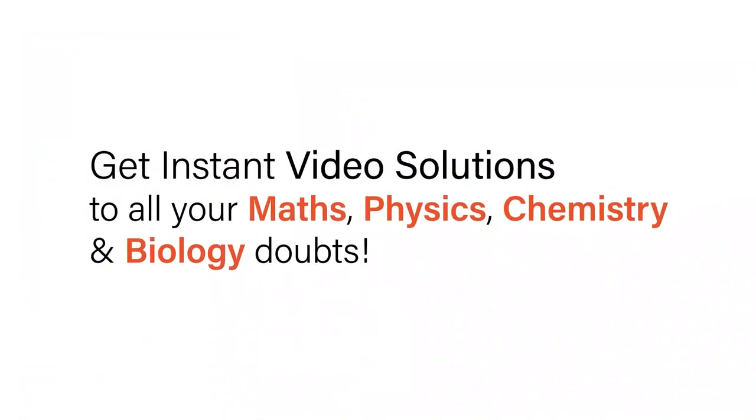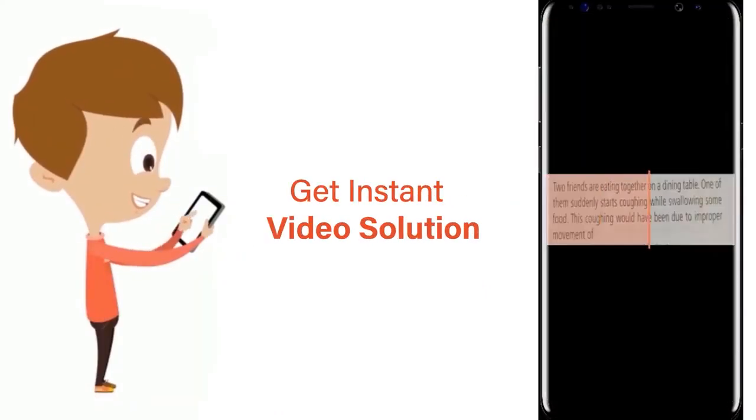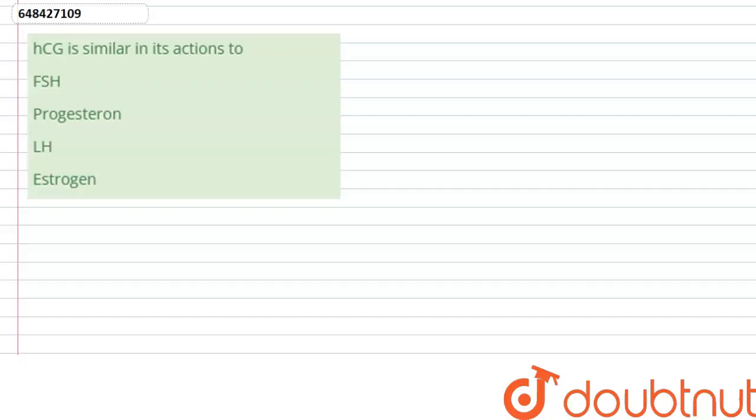With Doubtnet, get instant video solutions to all your maths, physics, chemistry and biology doubts. Just click the image of the question, crop the question and get instant video solution. Download Doubtnet app today. Question here says: hCG is similar in its action to FSH, progesterone, LH or estrogen.